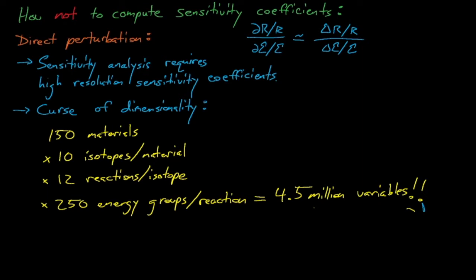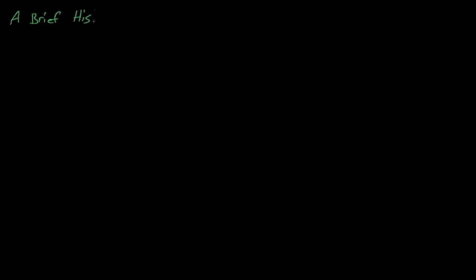Because we need high-resolution sensitivity coefficients, and because it's not feasible to estimate them using direct perturbation, sensitivity analysis methods in nuclear criticality safety will generally use adjoint-based approaches to estimate these sensitivity coefficients. Computing these adjoints isn't easy, and advancements in sensitivity codes generally provide more and more efficient means for estimating these adjoint fluxes. We'll spend more time discussing just how these methods work in a few minutes, but first let's review a brief history of these sensitivity methods.